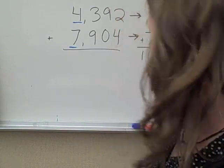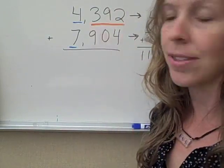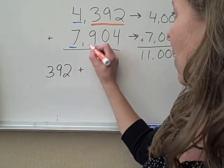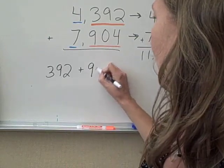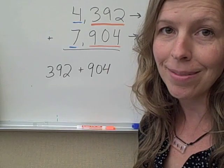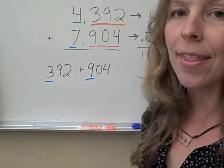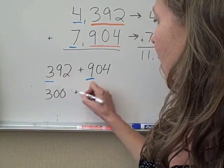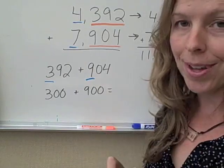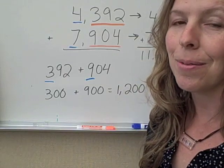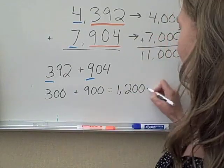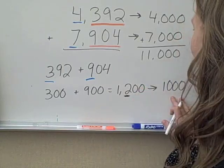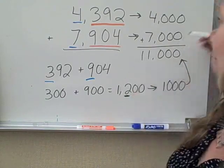Now we have to look at the leftovers. We dropped 392. So we need to remember that, and we're going to add it to the leftovers from the second number, 904. But we're using front-end estimation. So we're only going to look at those numbers leading digits. And the rest of the numbers, the rest of the digits become zeros. So 392 becomes 300. 904 becomes 900. We add 300 plus 900, we get 1,200. And then we round to the nearest thousand. That's 1,000 because we're looking at the two in the hundreds place. It's less than five. So that becomes 1,000.